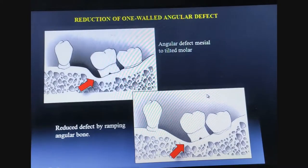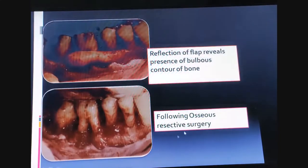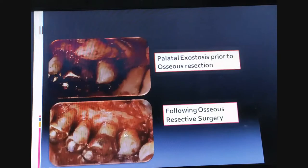For reduction of a one-wall angular defect mesial to a tilted molar, we can reduce the defect by ramping the angular bone, making it easy for cleaning and removal of bacterial debris. Reflection of the flap reveals a bulbous contour of bone; after osseous resective surgery, this is removed. Similarly, a palatal exostosis is removed.